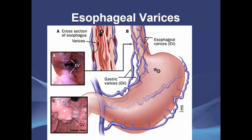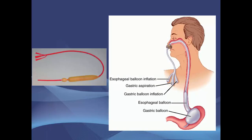The Sengstaken-Blakemore tube has two balloons — one that goes in the stomach and one in the esophagus — and traction is applied. This is used when esophageal variceal bleeding is uncontrollable.